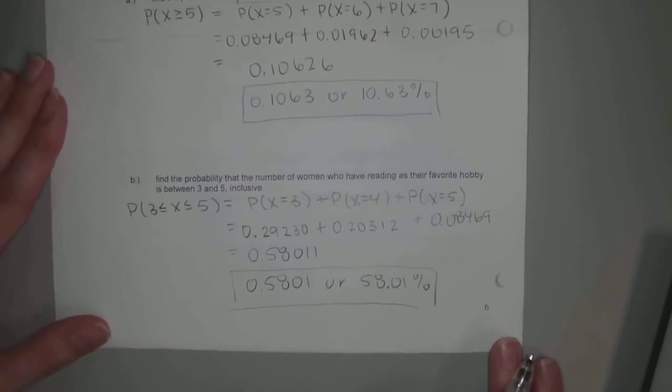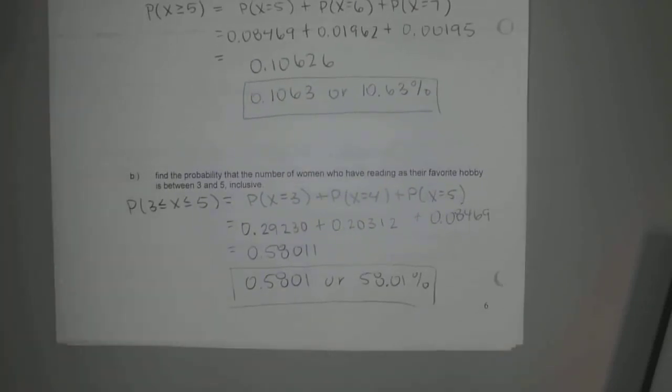The reason why this one's a little bit higher, 41%, guys, is kind of in the middle. So you'd expect about the middle of seven to say, yes, reading is my favorite hobby. And that's kind of where we're looking at the three, four, and five range. So our odds are a little bit higher.